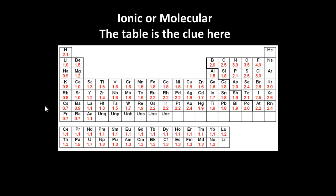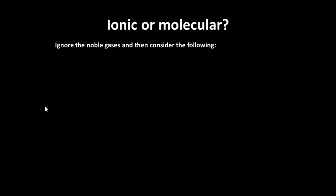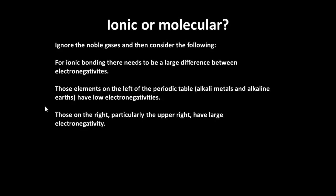Okay, so let's go back and just consider some general ideas, ionic or molecular. Are we going to have an ionic compound or a molecular compound? Remember, the table's the clue. So you look at the differences between electronegativities. And for ionic bonding, large differences are required between electronegativities. So elements on the left have low electronegativity. Those on the right will have a higher electronegativity.